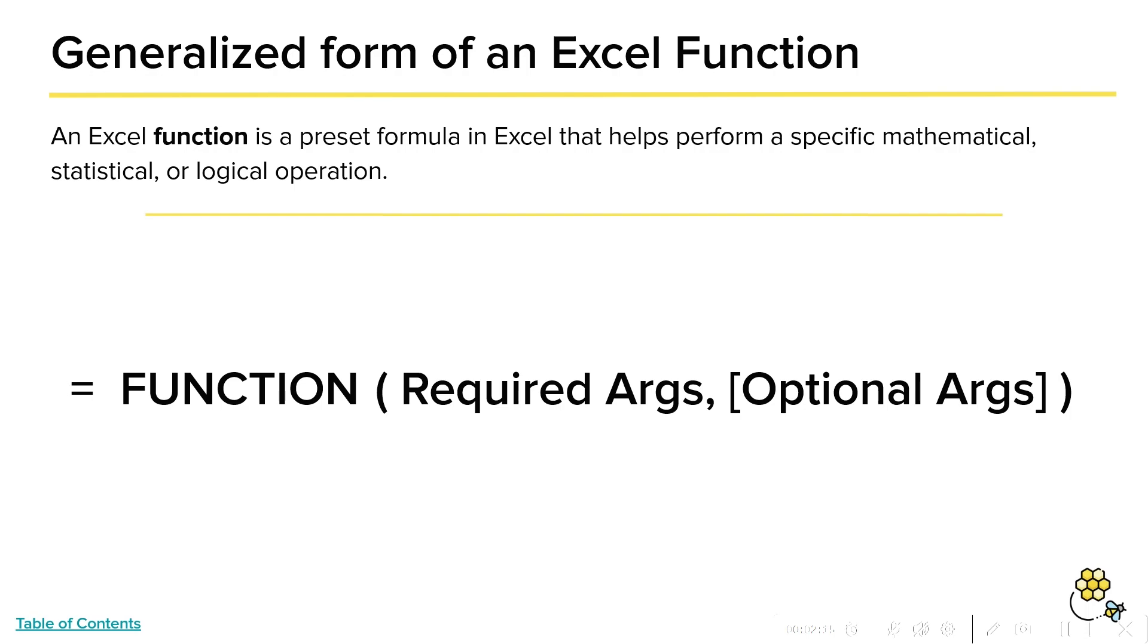You can have anywhere from zero to hundreds of arguments inside of a particular function. When you see a function that has arguments without brackets, that means that the argument is required. Without that argument being inputted into the function, the function cannot operate properly.